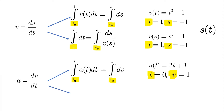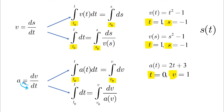The other possibility is when you have a as a function of v. In this case, a and dt exchange places and we integrate both sides with respect to dt and dv. For example, a(v) equals ln(v) with t and v given as boundary conditions.